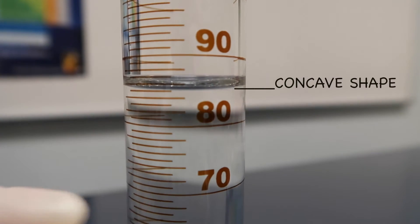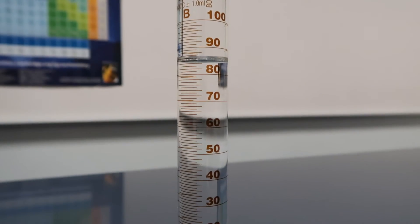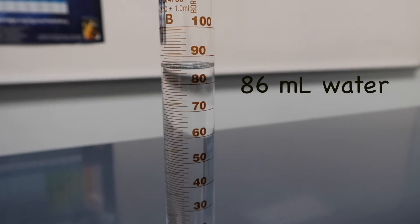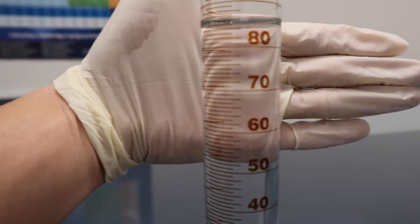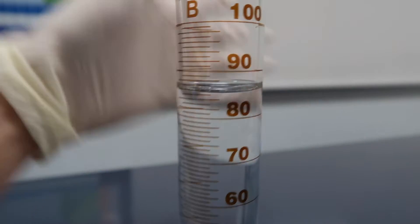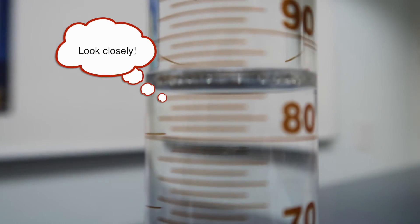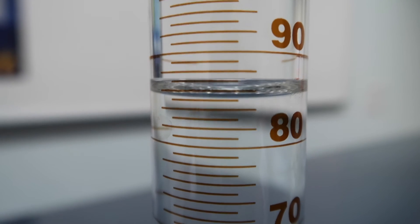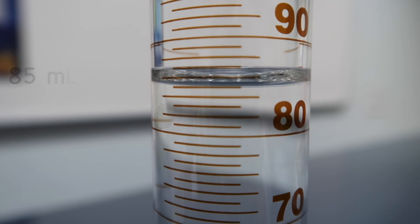That's why we have a concave shape inside. It looks like 82, 84, it looks like 86. So here, it looks like 86 ml. But if you look carefully at the lower meniscus, here it is. It's not 86, it's 85 ml.